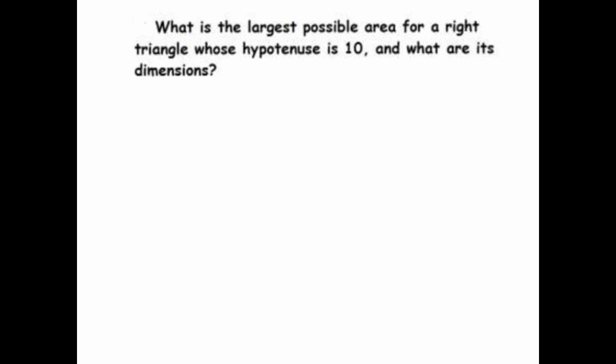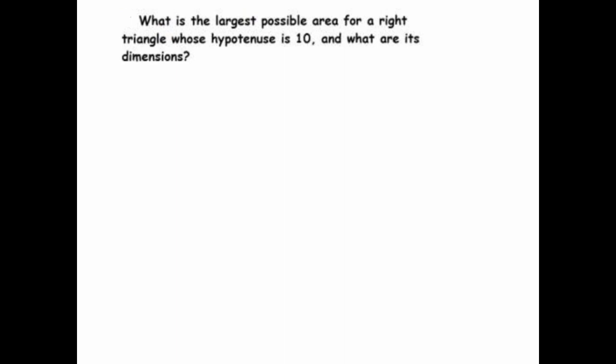Here's one more optimization problem involving a triangle. What's the largest possible area for a right triangle whose hypotenuse is 10, and what are its dimensions? Let's take a second to draw our triangle. We know the hypotenuse has to be 10, and I want to maximize the area — I want the largest possible area.